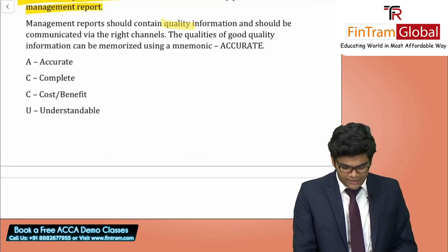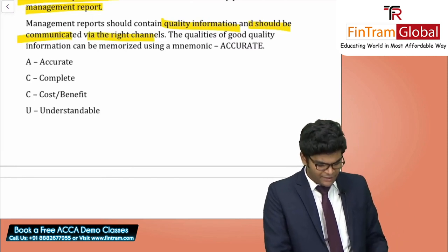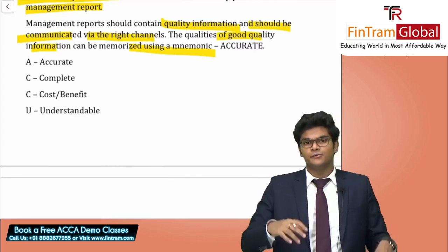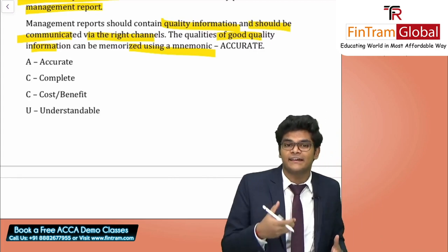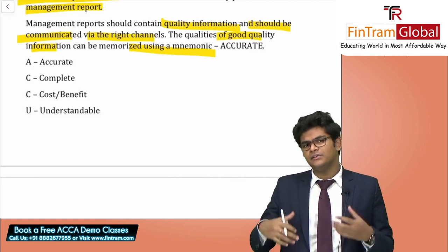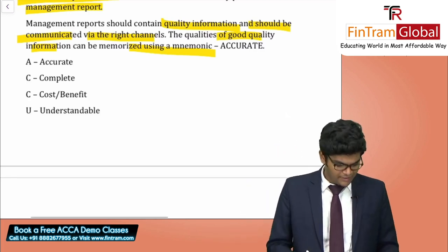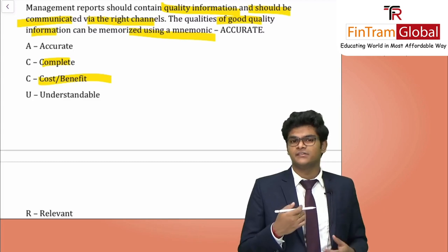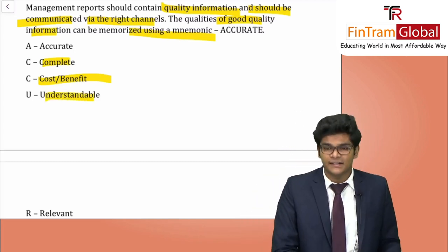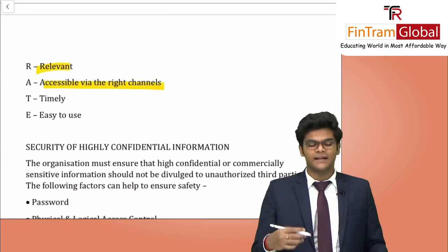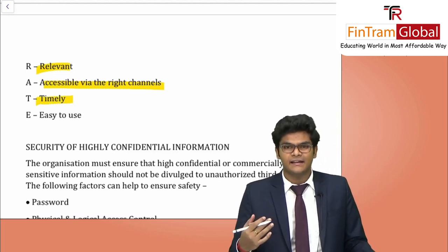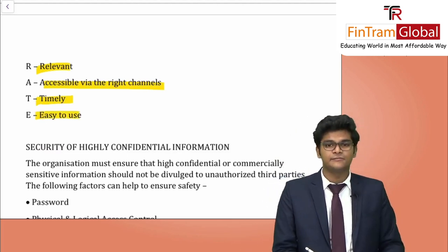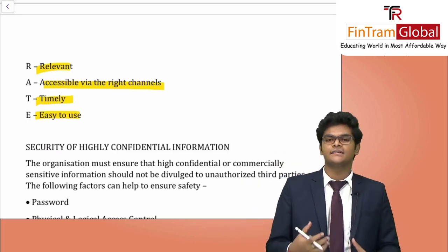Management reports should contain quality information communicated via the right channels. The qualities of good information can be remembered using the mnemonic ACCURATE: Accurate, Complete, Cost-benefit (benefits must exceed cost), Understandable, Relevant, Accessible (right channel), Timely (right information at the right time), and Ease of use.